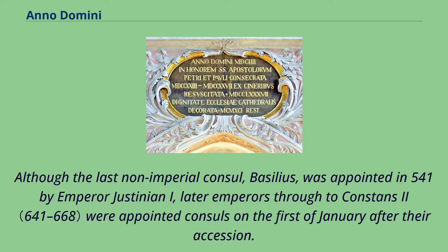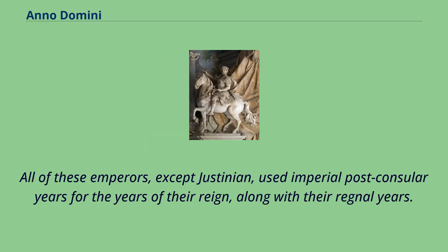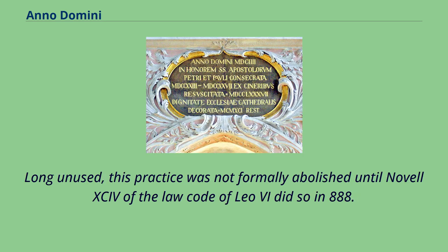Later emperors through to Constans II were appointed consuls on the 1st of January after their accession. All of these emperors, except Justinian, used imperial post-consular years for the years of their reign, along with their regnal years. Long unused, this practice was not formally abolished until Novell 94 of the Law Code of Leo VI did so in 888.